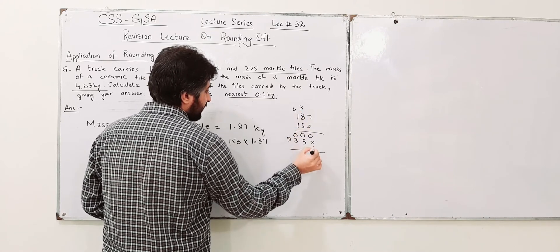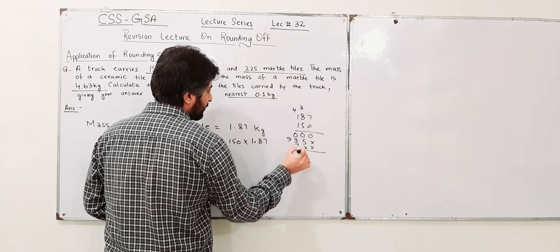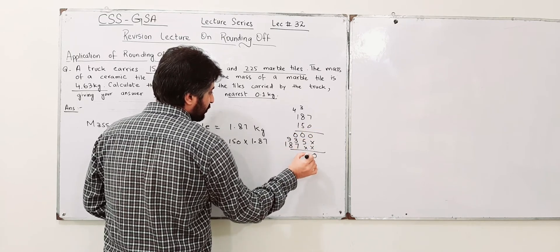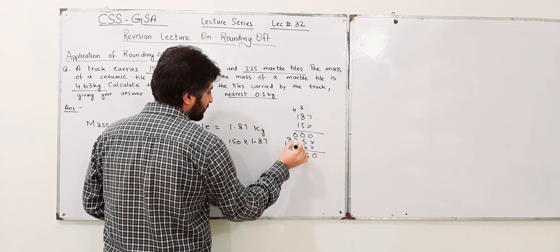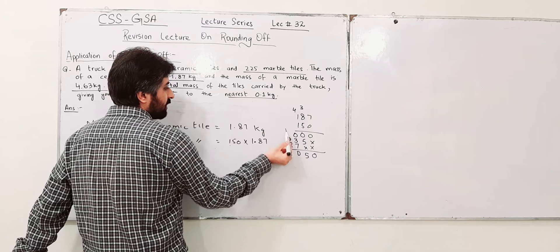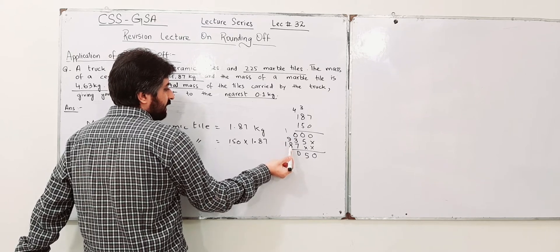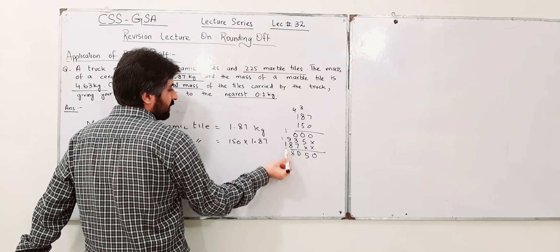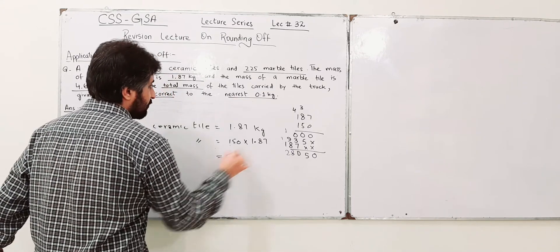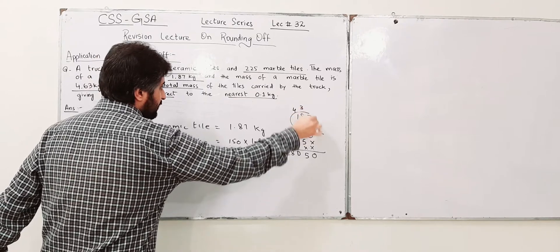1 times 7 is 7, 1 times 8 is 8, 1 times 1 is 1. It is 0, 5, 0. 7 plus 3 is 10, 0 over here, 1 over here. 9, 8 plus 1 is 9, and 9 is 18. 8 and 1, 1 plus 1. This is the answer for the multiplication of these two.